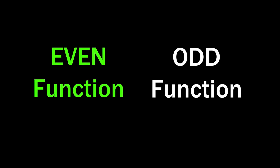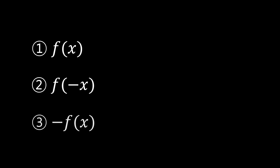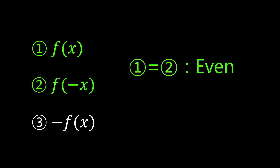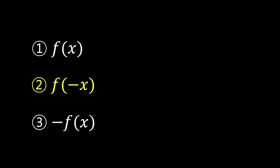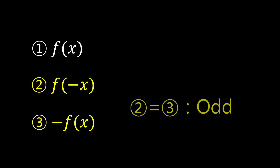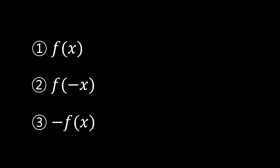Today's video is all about quickly and easily determining whether a given function is even or odd. The method uses three representations: the first is f(x), the second is f(-x), and the third is -f(x). If the first and second representations are equal, then f is an even function. If the second and third are equal, then f is an odd function. If neither condition holds, then it's neither. Let's dive into an example.